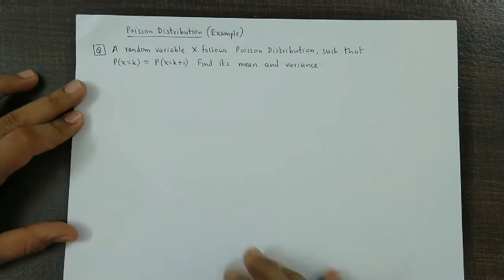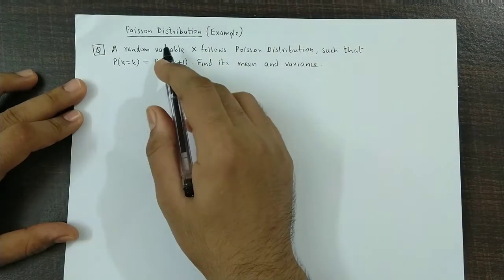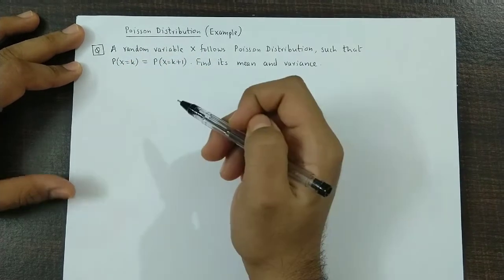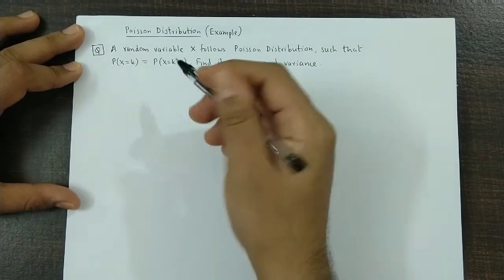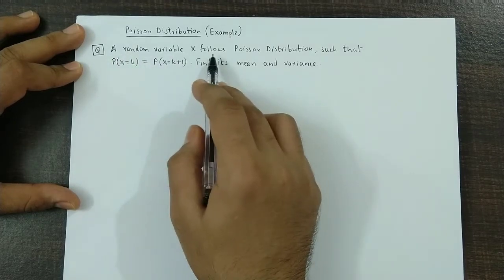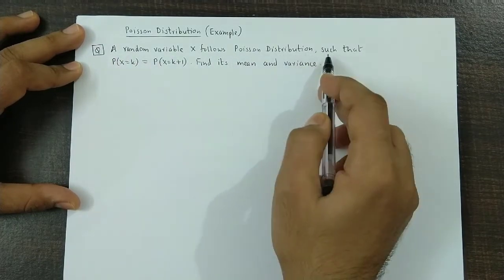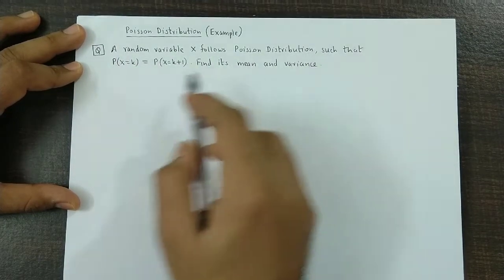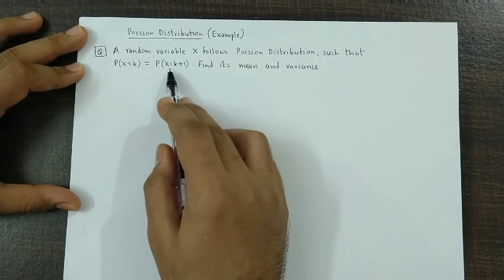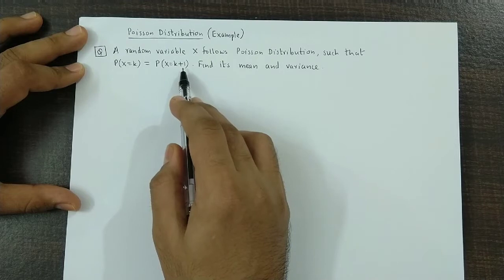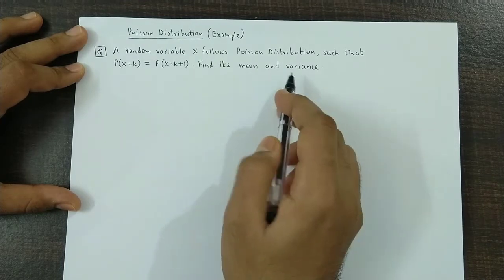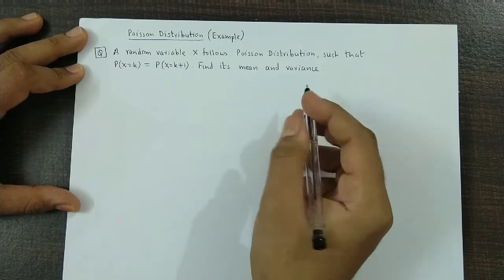Hello and welcome back. Now we are going to talk about an example based on Poisson's distribution. The question is given as: a random variable x follows Poisson's distribution such that probability at x equal to k is equal to probability at x equal to k plus 1. We have to find the mean and the variance of the Poisson's distribution.